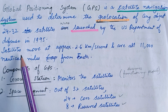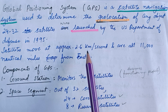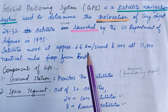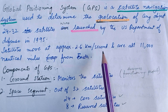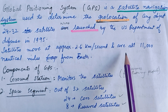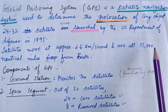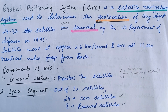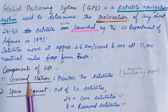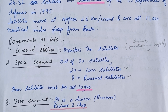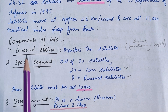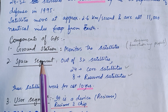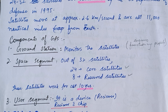Satellites move at approximately 2.6 km per second and are about 11,000 nautical miles from Earth. There are three components of GPS: Ground Station, Space Segment, and User Segment.